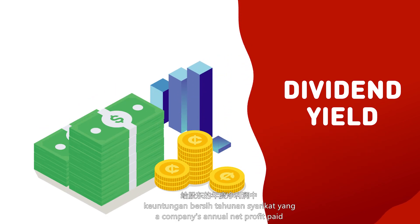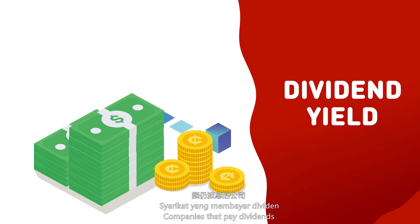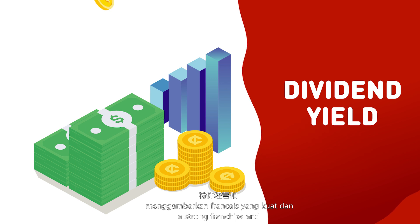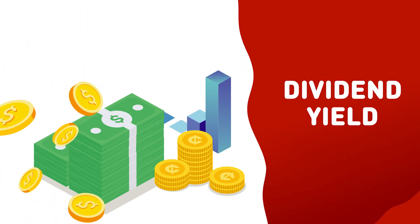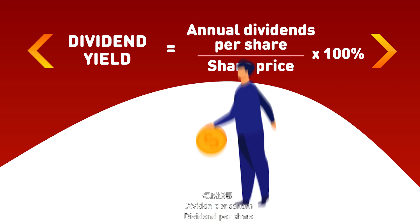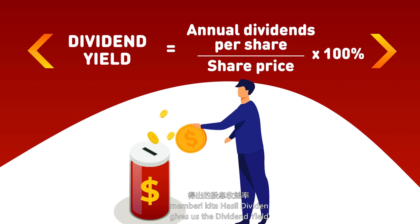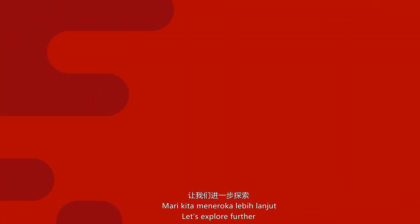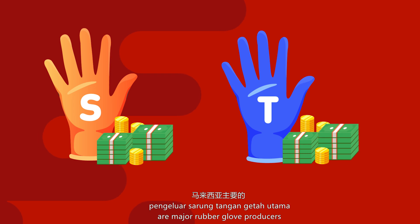Dividend is the share of a company's annual net profit paid to shareholders for owning the stock. Companies that pay dividends over time indicate a strong franchise and good management quality. Dividend Per Share divided by the share price gives us the dividend yield, measured as a percentage.